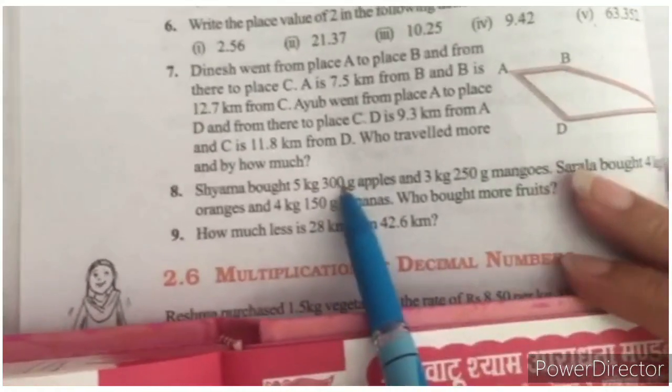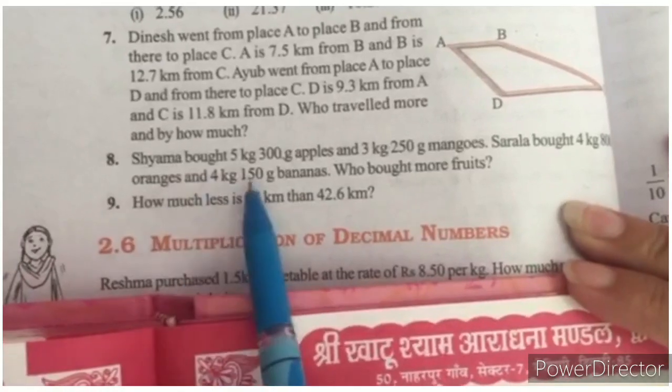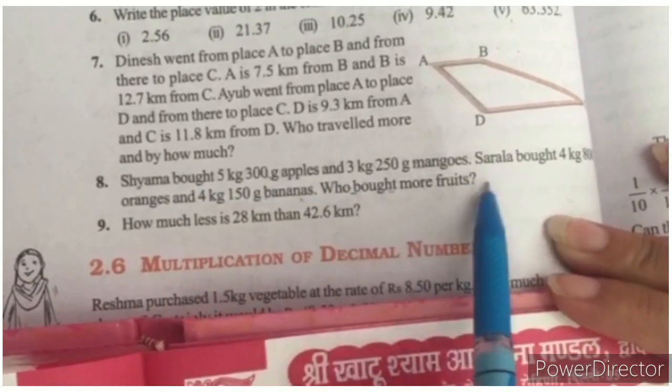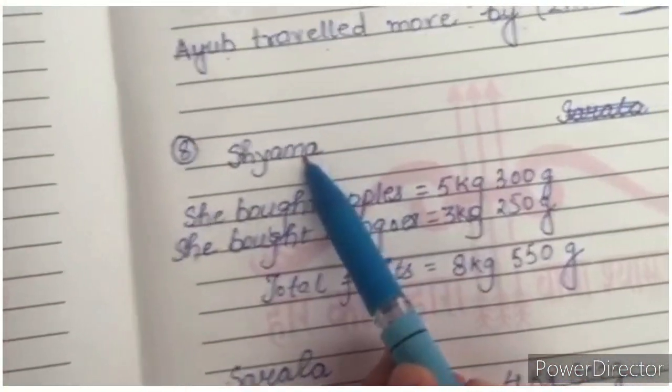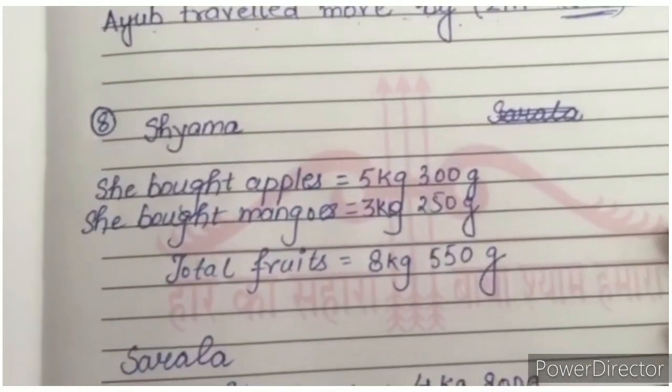Question number 8. Shama bought this much apples and this much mangoes. Whereas Sarla bought this much oranges and this much bananas. We have to find who bought more fruits. It is very easy question. Here we will write Shama's case. First we will solve Shama's case.